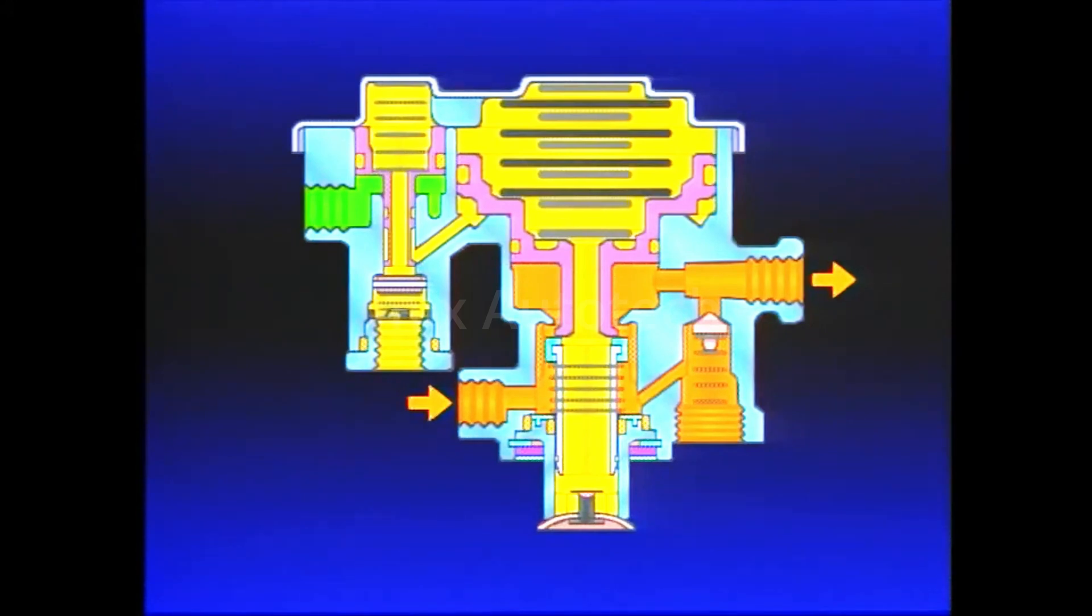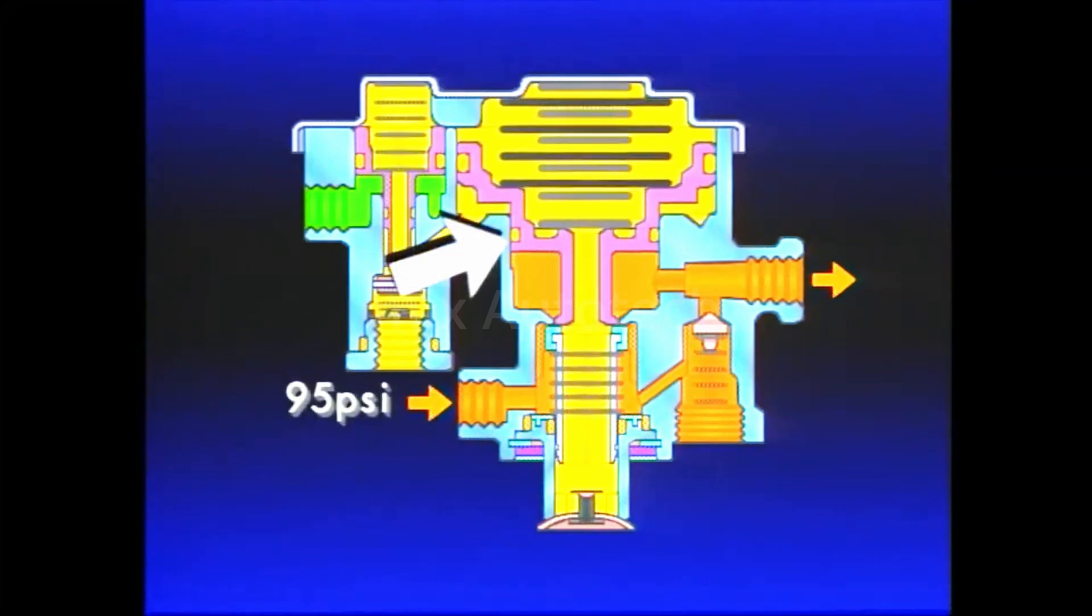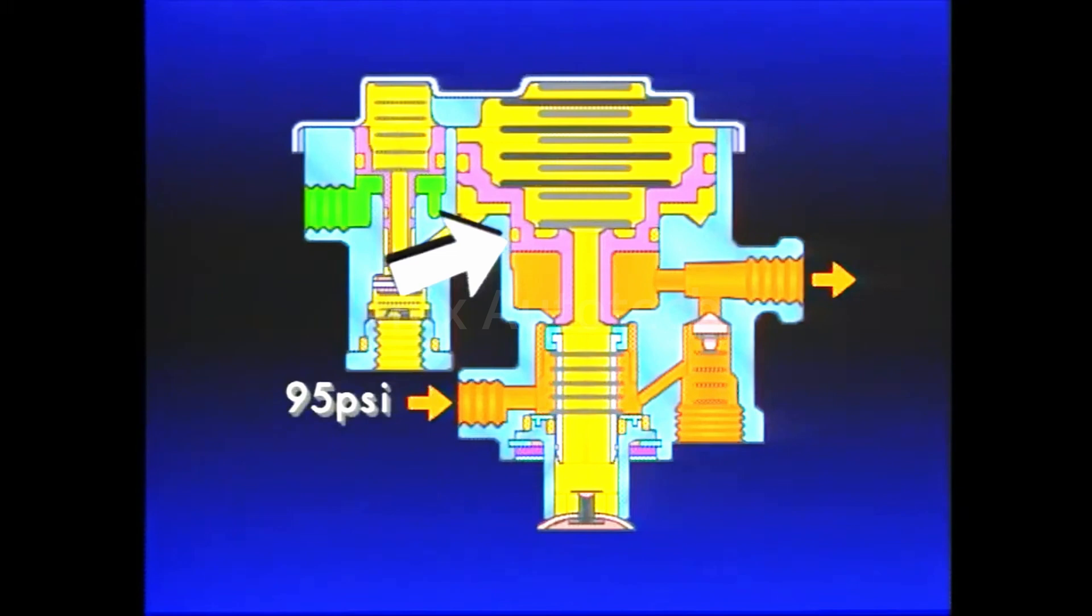When the air pressure going to the spring brakes beneath Piston B is about 95 PSI, Piston B rises slightly, closing the inlet, but not enough to open the exhaust. A balanced state is achieved.